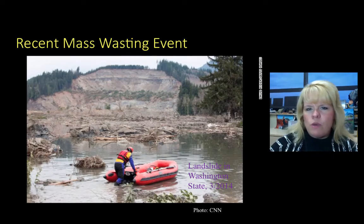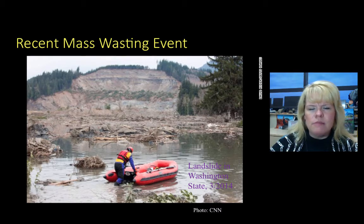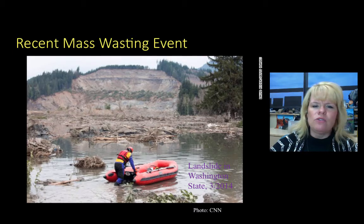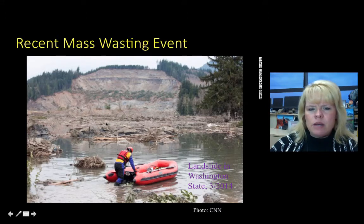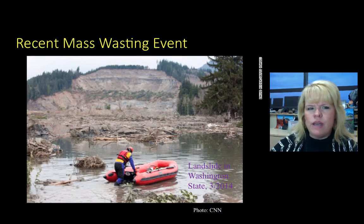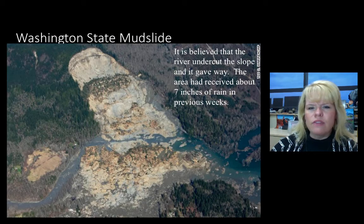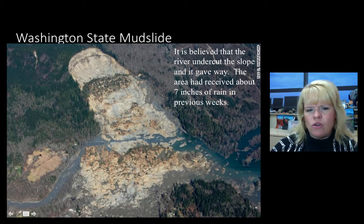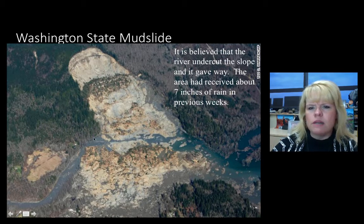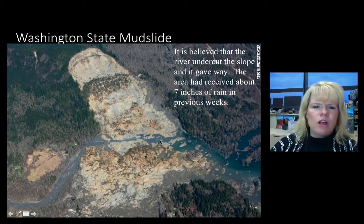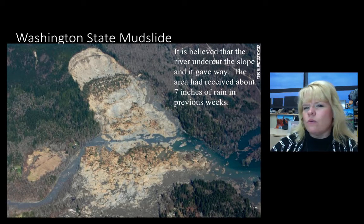This is a recent mass wasting event in Washington State where in March of 2014, a big landslide occurred. It dammed up a river — a devastating consequence of a very rapid mass wasting event. This aerial shot shows how the whole thing just buried a river and dammed it up. It is believed that the river undercut this slope and it finally gave way.